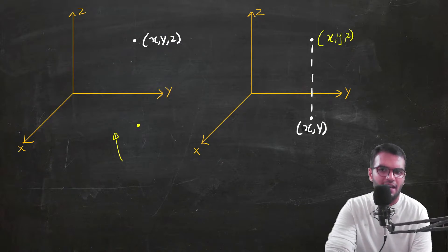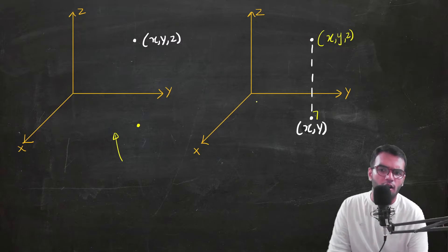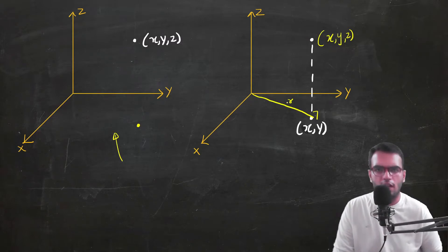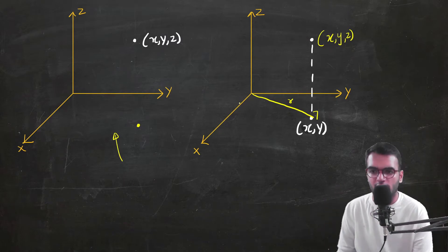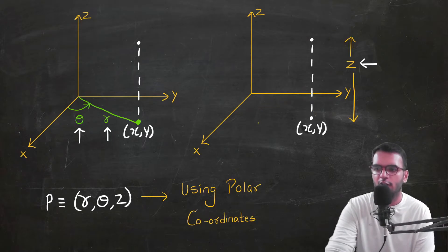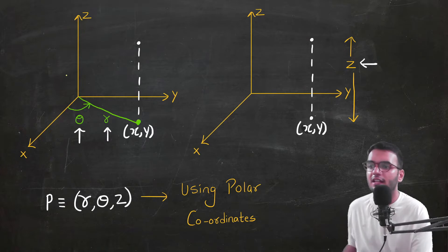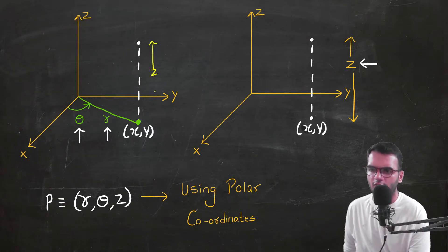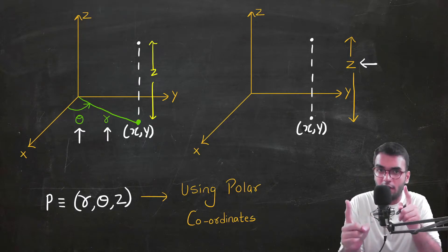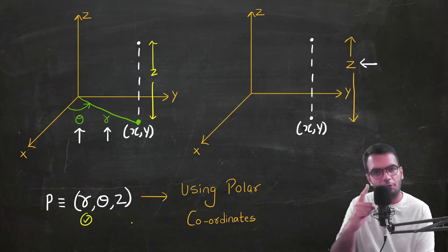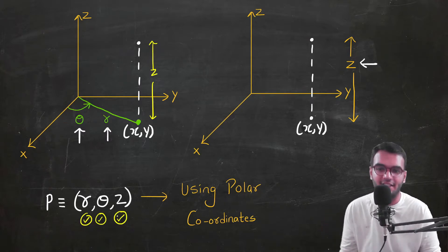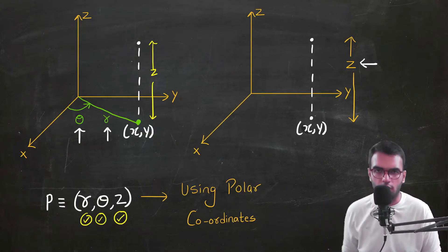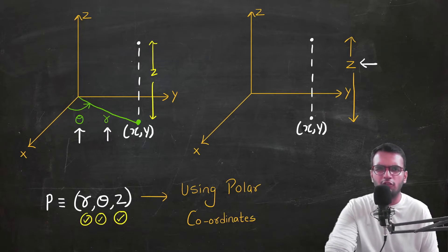From the origin, we draw a line r to the projected point in the xy-plane — just as in polar coordinates — and measure angle theta in the anticlockwise sense from the x-axis. The height z remains the same as in Cartesian coordinates. So in 3D, the cylindrical coordinates are r (same as 2D polar), theta (same as 2D polar), and z (the height).